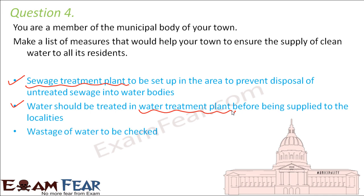Wastage of water should be checked by ensuring that all water pipelines are perfectly fine and there are no leakages so that water does not leak out and get wasted. These are some of the things which should primarily be taken care of to ensure that the water supply to residential areas is clean.